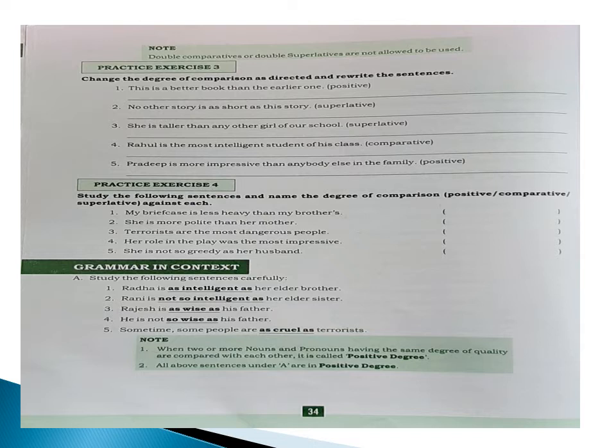In the second sentence, 'Rani is not so intelligent as her elder sister,' we have used 'not so...as.' In the fourth sentence also: 'He is not so wise as his father.' So where there is a negative sentence, we use 'so...as.' And when we have a positive or affirmative sentence, we use 'as...as' in the positive degree. Got the point?